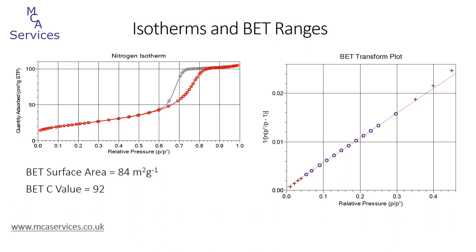The final thing we'll look at is the correlation coefficient of our data points sitting on that linear regression line. In this case it's 0.99997, and we would usually expect this to exceed 0.999. So given a full adsorption isotherm, we've reliably fitted the BET range to determine the surface area of this sample.